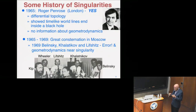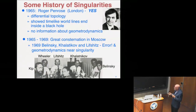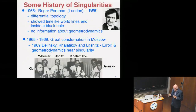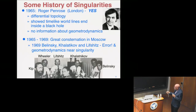This caused great consternation in Moscow. Penrose published his result and presented it at the General Relativity Conference in London in 1965, which Khalatnikov and I both attended — my first major conference as a young physicist. The Moscow group struggled to find whether there was something wrong with their analysis, and if so, what.